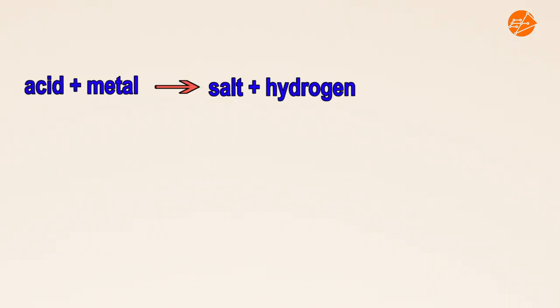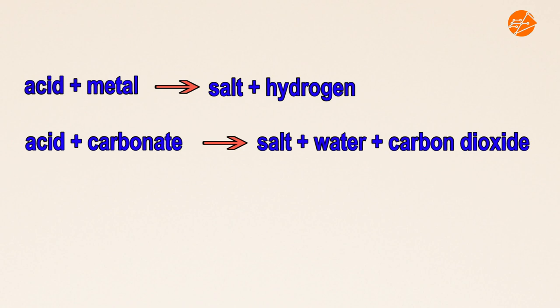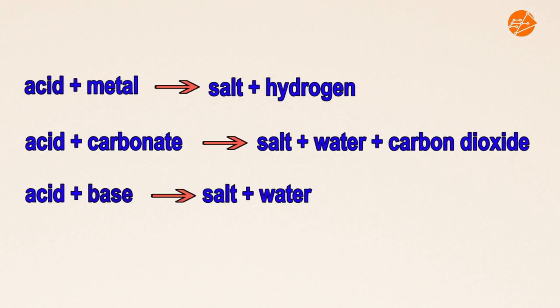There are three characteristic reactions of acids. The first is the reaction of an acid with metal to produce a salt and hydrogen gas. The second is the reaction of an acid with a carbonate to produce a salt, water and carbon dioxide gas. The third is the reaction of acids with bases to produce a salt and water.